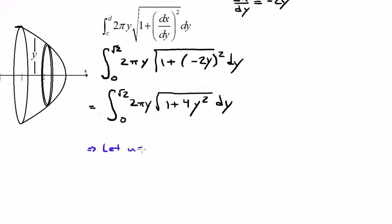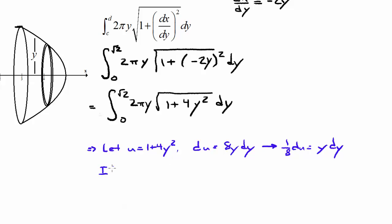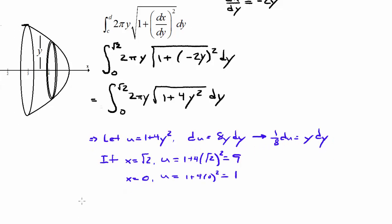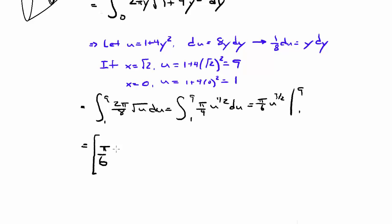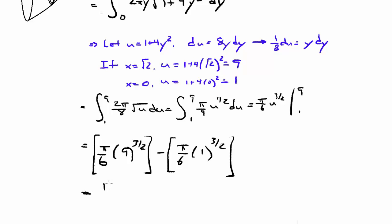This is another substitution: let u equal 1 plus 4y squared, so du equals 8y dy, meaning 1/8 du equals y dy. Changing bounds: when y equals root 2, u equals 1 plus 4 times (root 2) squared, which is 9; when y equals 0, u equals 1. Plugging everything in gives the integral from 1 to 9 of 2π over 8 times root u, simplified to π/4 times u to the 1/2. The antiderivative is π/6 times u to the 3/2, evaluated from 1 to 9. Plugging in 9 minus 1 gives 13π/3.